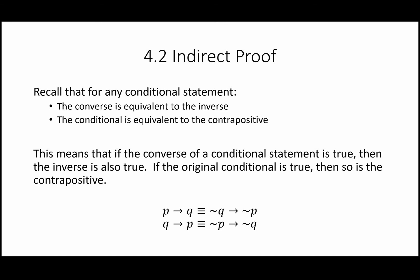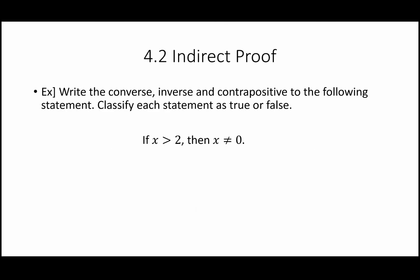Let's practice writing the converse, inverse, and contrapositive of a conditional statement and classify each as true or false. Original statement: if x is greater than 2, then x does not equal zero. That's true — x must be strictly greater than 2, so three, four, five, six, or any fraction above two. Zero cannot take on a value of x under this stipulation. True.